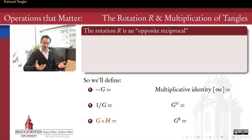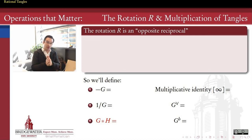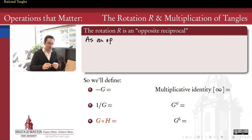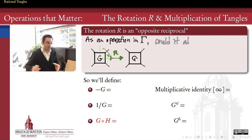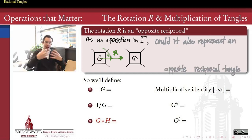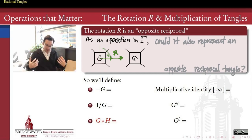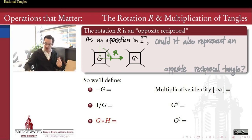So how about multiplication? We have to come at it from a slightly different angle, because in our tangle group we don't know how to multiply directly, but we do know how to take opposite reciprocals — that's what we represented the rotation operation by. So as an operation in the tangle group, this rotation by 90 degrees achieves an opposite reciprocal. To figure out what that has to do with multiplication, let's think about taking that opposite and that reciprocal as two separate operations on tangles.